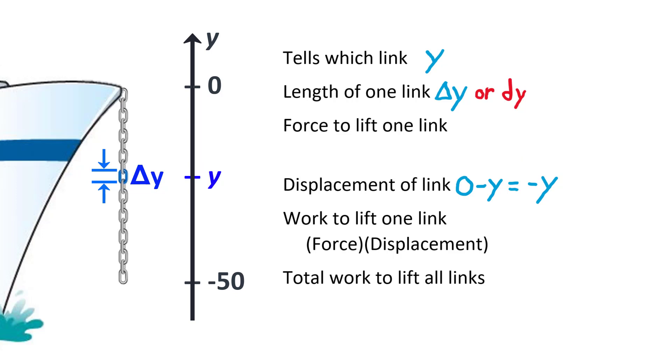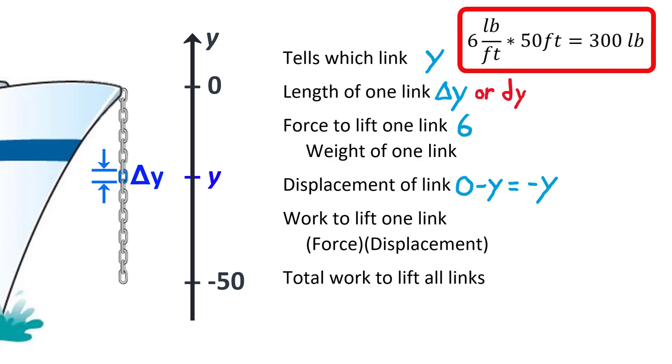Now what about the force required to lift the link? That force is equal to the weight of the link, so we need to know how much a link weighs. We found the weight of the entire chain by multiplying the weight of 6 pounds per foot by the length of the chain in feet. We can do that with one link as well. We multiply 6 pounds per foot by the length of one link. How long is a link? The length of a link is delta y, so the weight of a link is 6 times delta y.